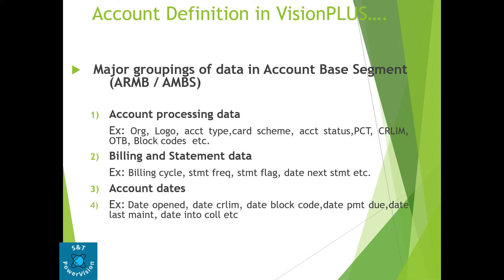The major grouping of data in the account base segment contains account processing data like org and logo, account type, card scheme, account status, PCT (processing control table), credit limit, OTB (open to buy — how much balance is available to use), block code, and billing cycle date. Billing and statement data contain billing cycle, statement frequency, statement flag, and date of next statement. Account dates include date account was opened, date credit limit set, date block code, payment due date, date last maintained, and date into collection.